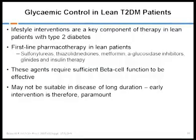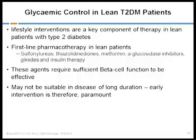Regarding treatment, lifestyle intervention always remains the hallmark background therapy for every type of diabetes. These patients respond well to sulfonylureas, metformin, alpha-glucosidase inhibitors, glinides, and insulin therapy. Almost 70 to 80 percent of patients respond to oral therapy for a pretty long period of time, and only 20 to 30 percent go into secondary failure.